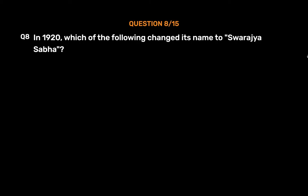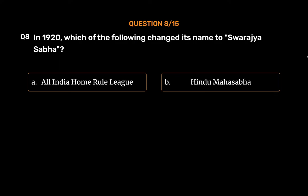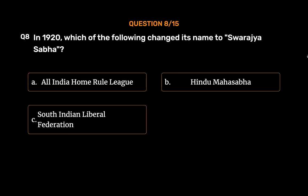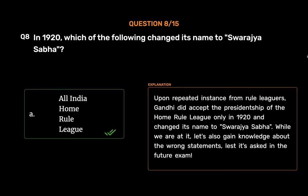Question No. 8. In 1920, which of the following changed its name to Swarajya Sabha? Option A: All India Home Rule League. Option B: Hindu Mahasabha. Option C: South Indian Liberal Federation. Option D: The Servants of India Society. The correct answer is Option A: All India Home Rule League. Upon repeated insistence from Home Rule Leaguers, Gandhi accepted the presidentship of the Home Rule League in 1920 and changed its name to Swarajya Sabha.